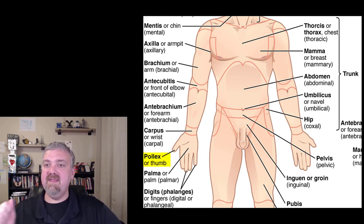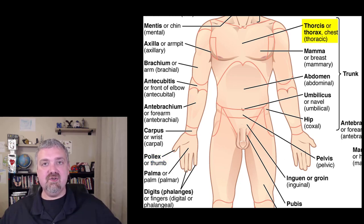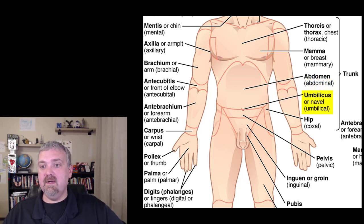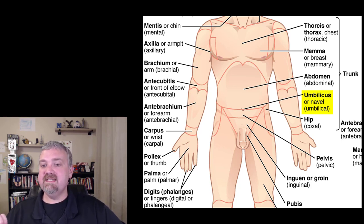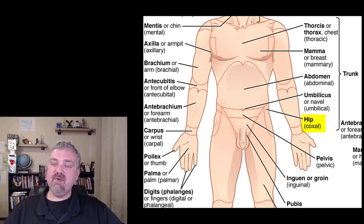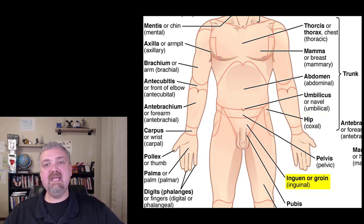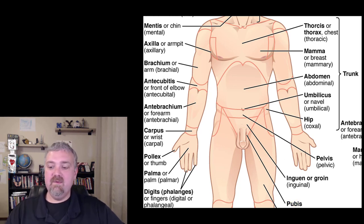This is going to be your thoracic region, your chest. Everything above the diaphragm is in the thoracic region. Mammar or mammary is for breast — think mammary glands. Abdominal or abdomen, you know that one. The umbilicus is your belly button — the umbilical region is where your umbilical cord was attached. Hip — the word for hip is coxal, so our pelvic bones as a group are called the os coxa or coxal bones. Your groin is inguinal — we'll use the term inguinal quite a bit, and we'll talk about the inguinal canal when we cover the male reproductive system. And then you have the pubis there.